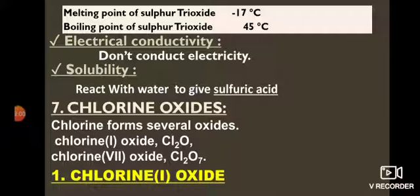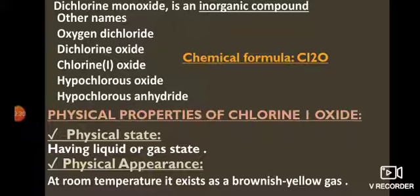Chlorine oxides — oxide number 7. Chlorine exists in several forms; the two given here are chlorine 1 oxide (Cl2O), where chlorine is in the −1 oxidation state, and chlorine 7 oxide (Cl2O7), where chlorine is in the +7 oxidation state. Chlorine 1 oxide is an inorganic compound also called oxygen dichloride, dichlorine oxide, hypochlorous oxide, or hypochlorous anhydride (formula Cl2O). It is the anhydride of hypochlorous acid (HOCl) — removing water from 2 moles of HOCl gives Cl2O.